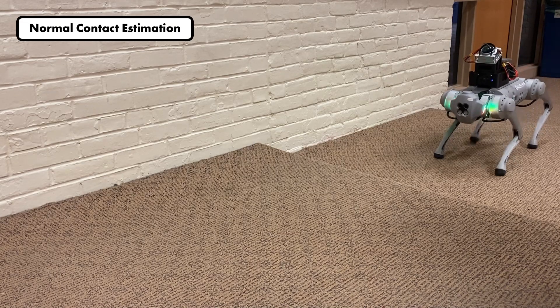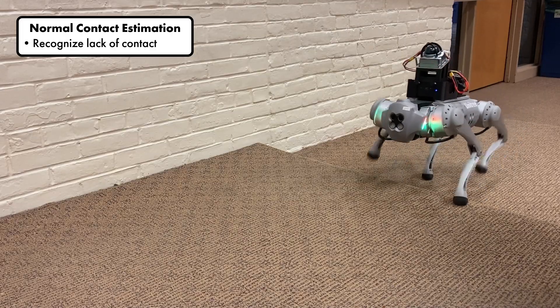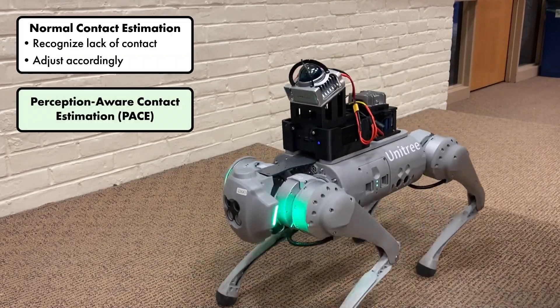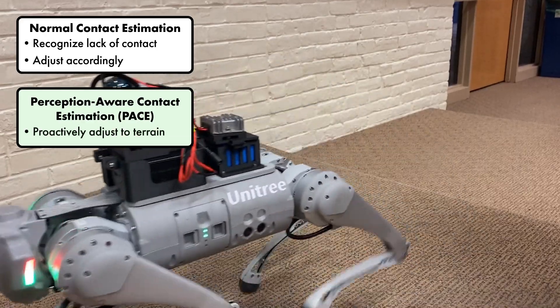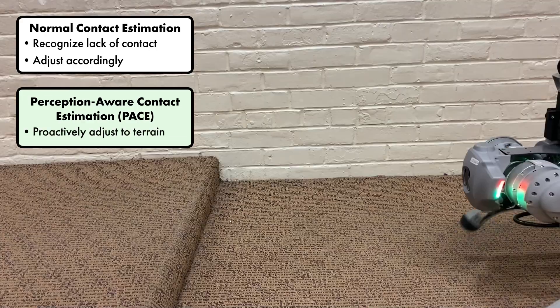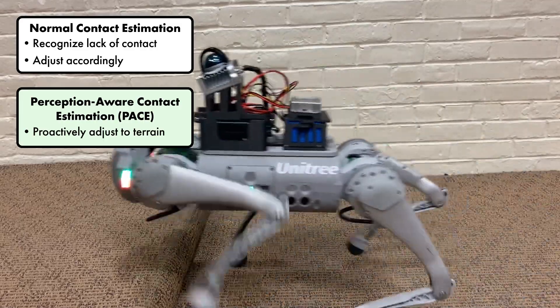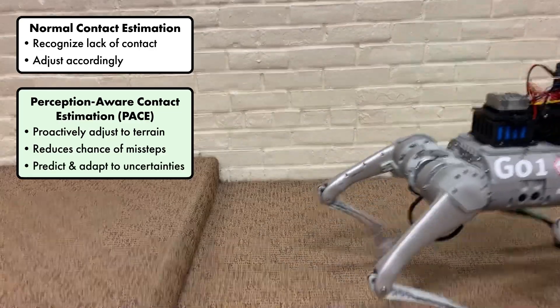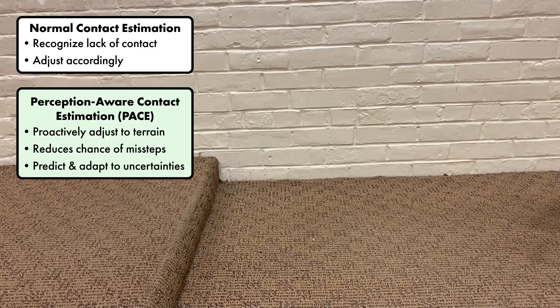Normal contact estimation methods are capable of recognizing a lack of contact when contact should have been made and adjust accordingly. But with PACE, the robot can proactively adjust its movements based on the anticipated terrain variations. This comes in especially handy when ascending and descending stairs. It reduces the chances of missteps and allows the robot to predict and adapt to uncertainties in the environment.